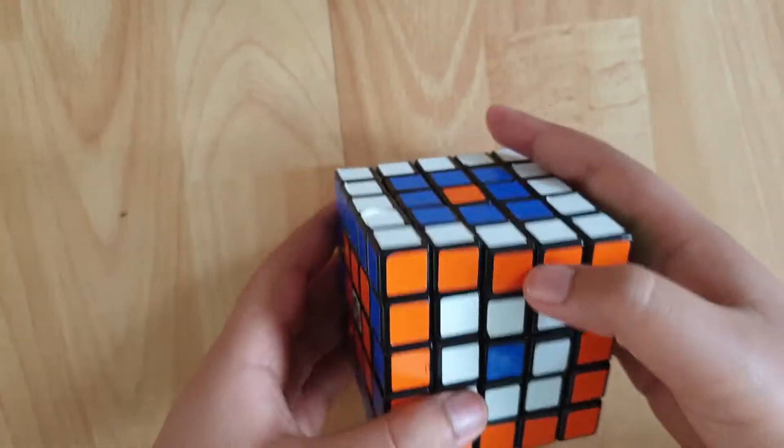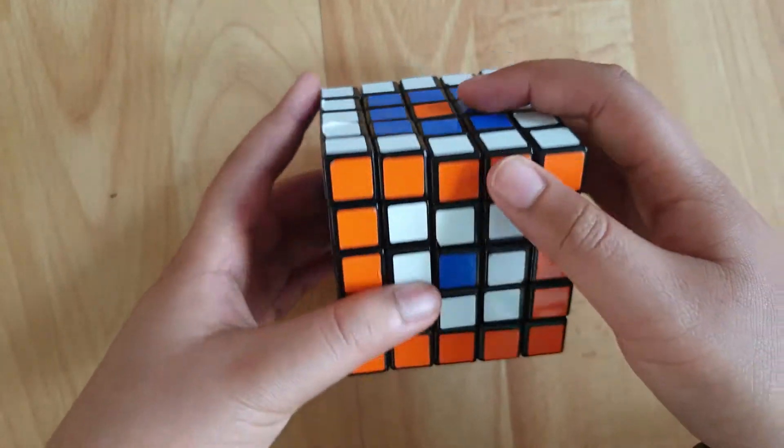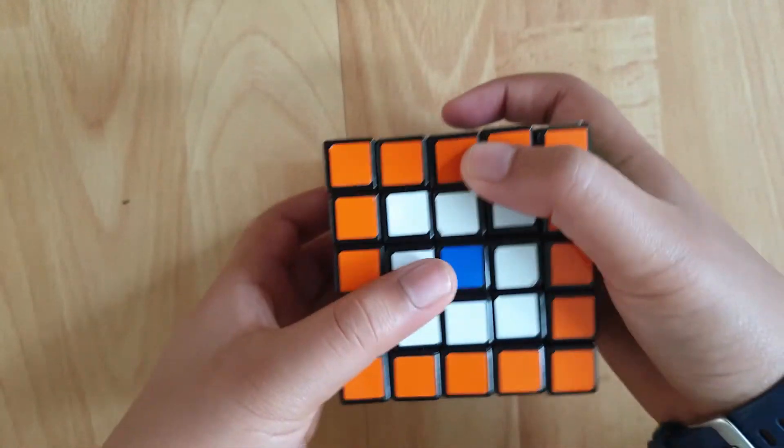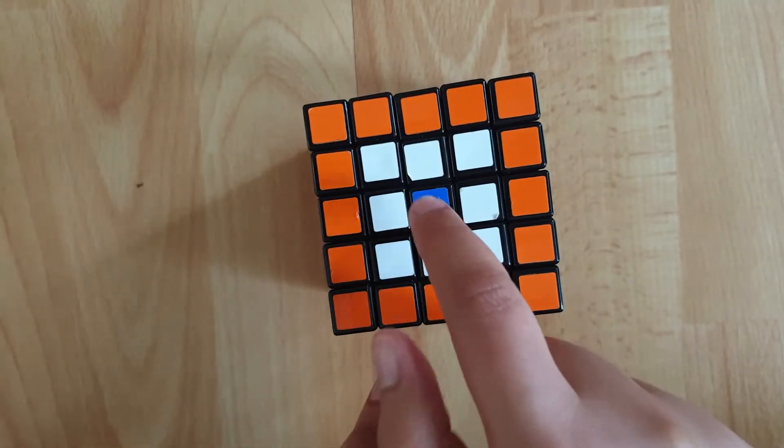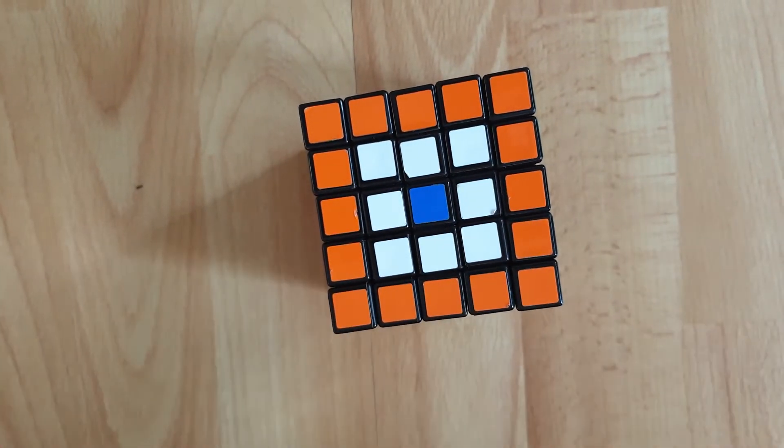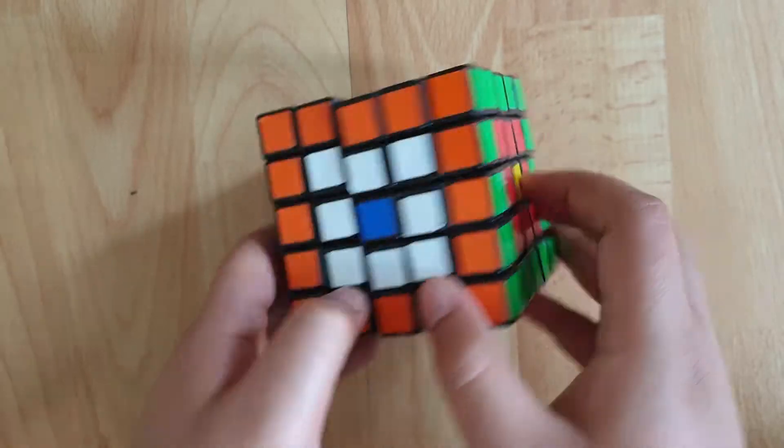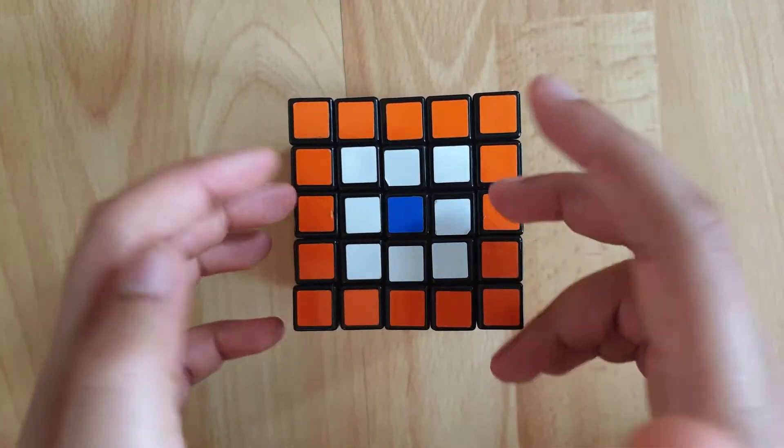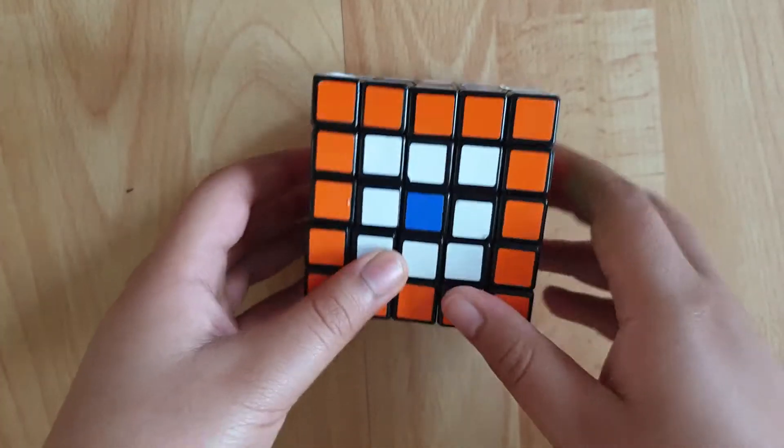But if you want to make it look like the same colors inwards, then what you're going to do is make the center color and the outer color the same. So this is it, it's done, but if you want to make it look like these two are the same color...